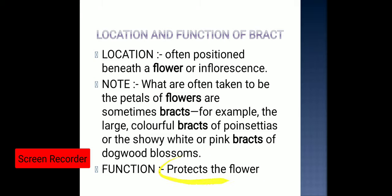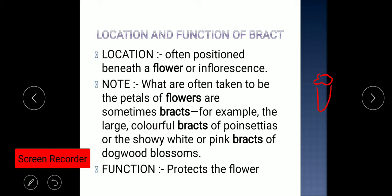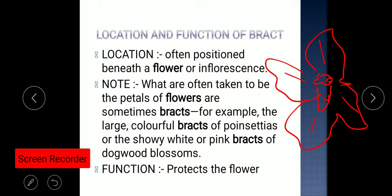The flower grows in the axil of the bract, and the bract provides protection to the flower. What are often taken to be petals of a flower are sometimes bracts. In bougainvillea, the pink color you observe is the bract, not the flower — the actual small flower is inside. Other examples include the large colorful bracts of poinsettias and the showy white or pink bracts of dogwood blossoms.